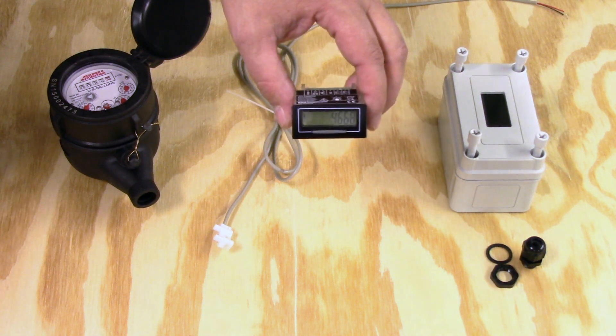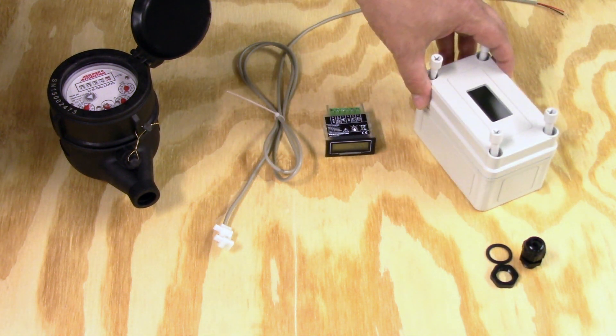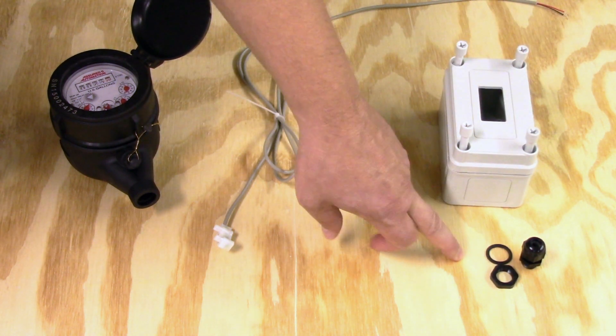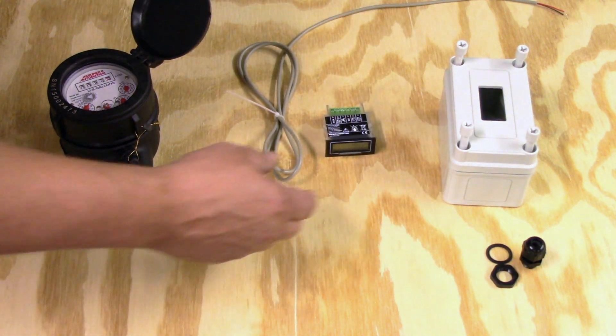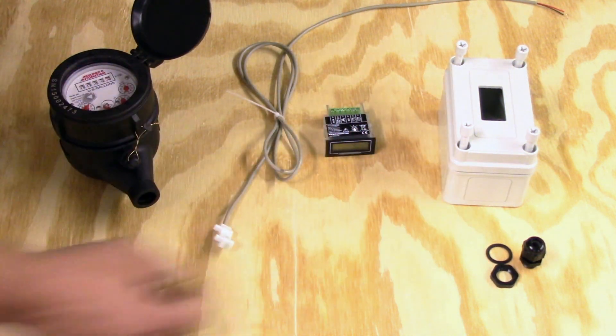Here's the single reed switch pulse output that installs quickly and easily to the face of that meter. The digital pulse counter itself and the weatherproof enclosure with the cable gland necessary to maintain the rating where the wire exits the box.